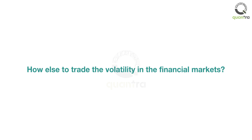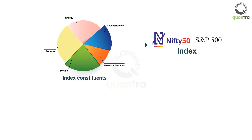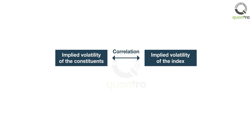But how else can you trade the volatility in the financial markets? In options trading, you can trade the correlation of the volatility of the index and the index constituents. The index constituents generally move together with the index, but when there is a deviation in the price movement, there is a trading opportunity. Advanced techniques like the correlation of the implied volatility can be used to find such trading opportunities.